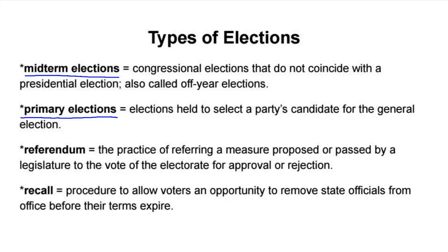You also have a couple of Progressive Era reforms that are related to elections. One is a referendum, which is added to a ballot in which people are given a direct voice in deciding in an up-or-down vote on a particular law. You could also have a recall election in which a person is forced to go before the voters sooner than they originally would have.